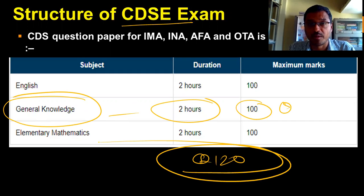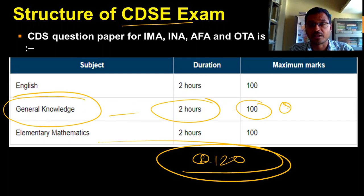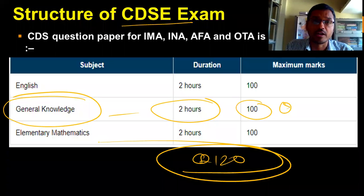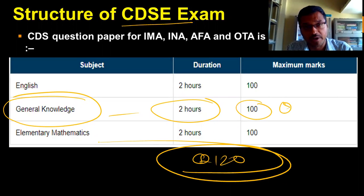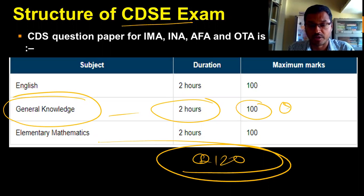This General Knowledge paper is very important. It matters because if you score more marks, the final SSB number that is calculated gives you a very significant advantage.